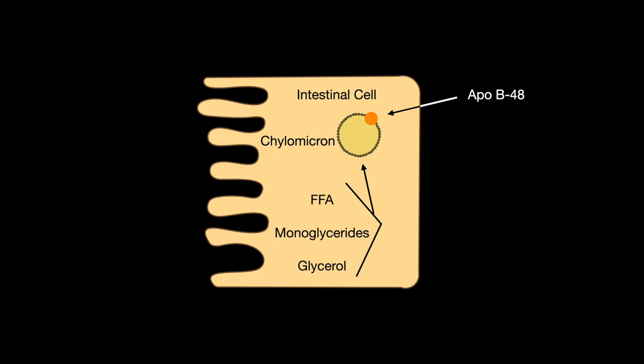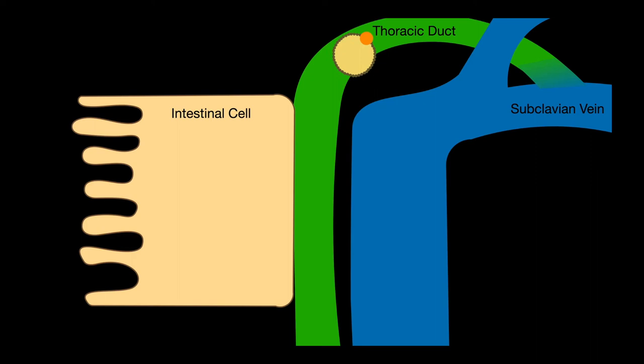They are reformed into triacylglycerides and packaged into chylomicrons with apolipoprotein B48, which enters into the lymphatic system by the lacteal. The chylomicrons enter the bloodstream by the thoracic duct via the subclavian vein.